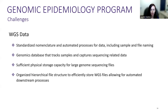There are also a number of implementation challenges. For whole genome sequencing data, it may sound simple but you need standardized nomenclature for automated processing — sample names, file names — and consistency across all samples. You need a genomics database that tracks samples and captures sequencing-related data. WGS generates loads of data: sequencer type, sample type, quality control metrics, and very large WGS files requiring sufficient physical storage. You need files organized in a hierarchical file structure to automate downstream processes — manual approaches only work for a few dozen samples, not hundreds or thousands per week.